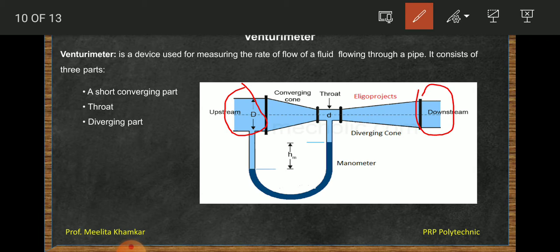Basically, the convergent cone is nothing but a gradually decreasing area pipe. If you observe here, the area is larger and the area becomes smaller. So this is a convergent type of cone. Then the divergent cone, the area at the inlet is smaller as compared to the area at the outlet. The convergent cone and divergent cone are connected by the throat. The throat is nothing but a simple constant area pipe of smaller diameter.